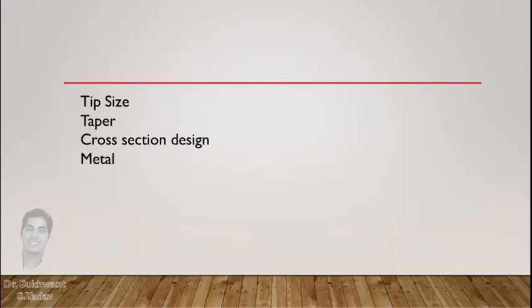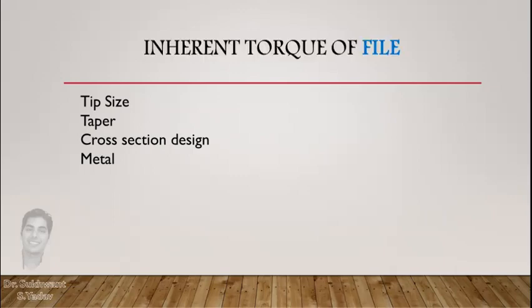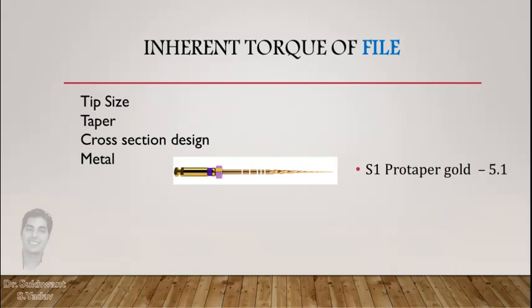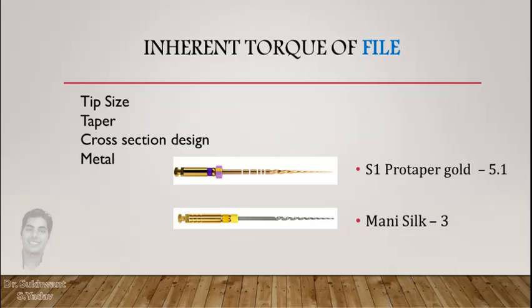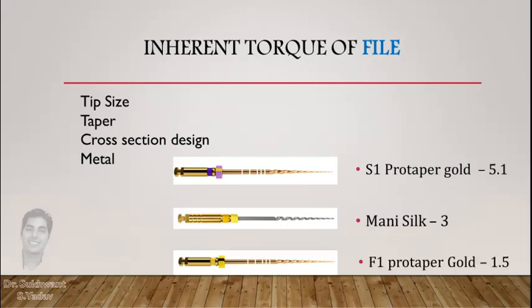This torque limit is not constant — it varies from file to file based on its size, taper, cross-section design, or the metal used for manufacturing. This is called the inherent torque of a file, or the capability of a file to withstand torque without fracture while maintaining its cutting efficiency. For example, it is 5.1 Ncm for S1 ProTaper Gold, 3 Ncm for Mani Silk files, and 1.5 Ncm for the F1 or S2 instrument.